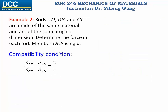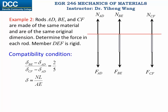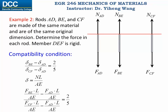Because for each rod its displacement equals NL over AE, and through a quick method of sections and equilibrium analysis the internal force equals the external force F, the compatibility condition becomes an expression in terms of the rod forces. Because all three rods have the same length, cross-sectional area, and Young's modulus, these terms cancel out, and the compatibility condition simplifies to: FBE minus FAD over FCF minus FAD equals 2 over 5.